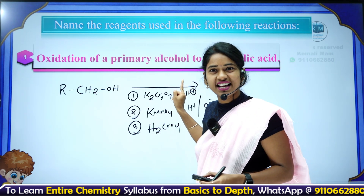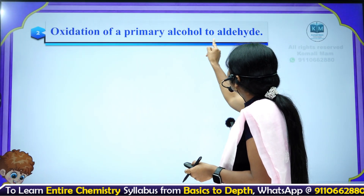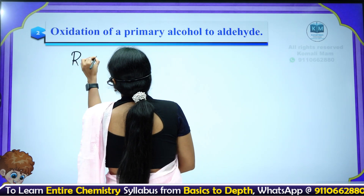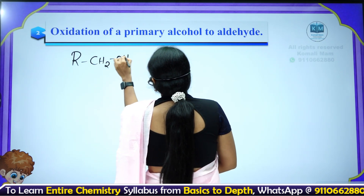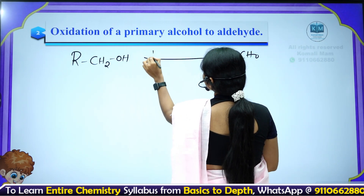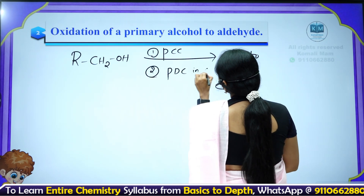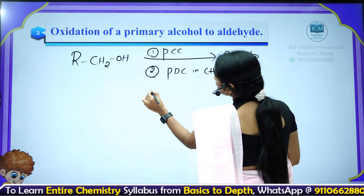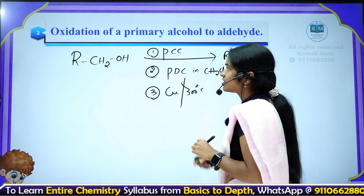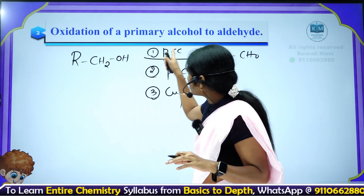Next question: oxidation of primary alcohol to aldehyde — stopping the reaction at the aldehyde stage. For example, take RCH₂OH and you want to stop here. The reagents you can use are: pyridinium chlorochromate, pyridinium dichromate in dichloromethane solvent, or copper over 300°C. Any of these mild oxidizing agents will stop the reaction at the aldehyde stage — no confusion.